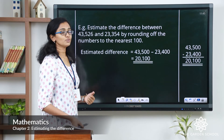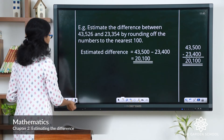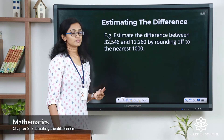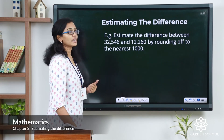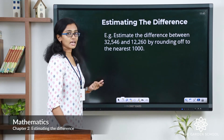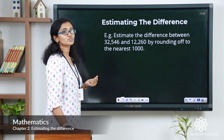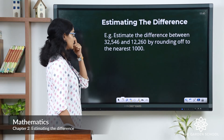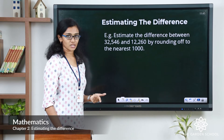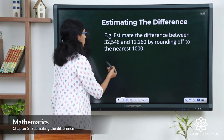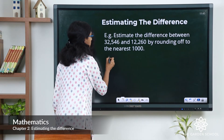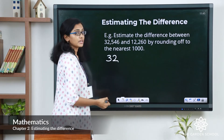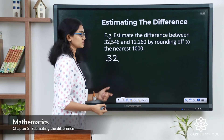I hope this is clear to you. Now we will see one more example. Estimate the difference between 32,546 and 12,260 by rounding off to the nearest thousand. First, let's round off the minuend to the nearest thousand.